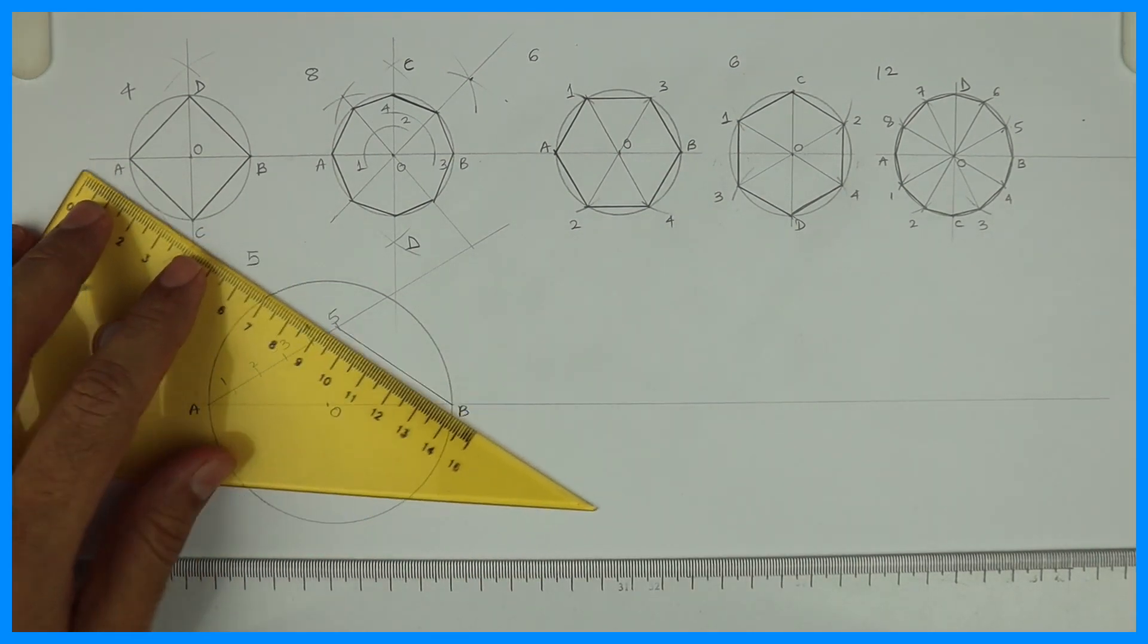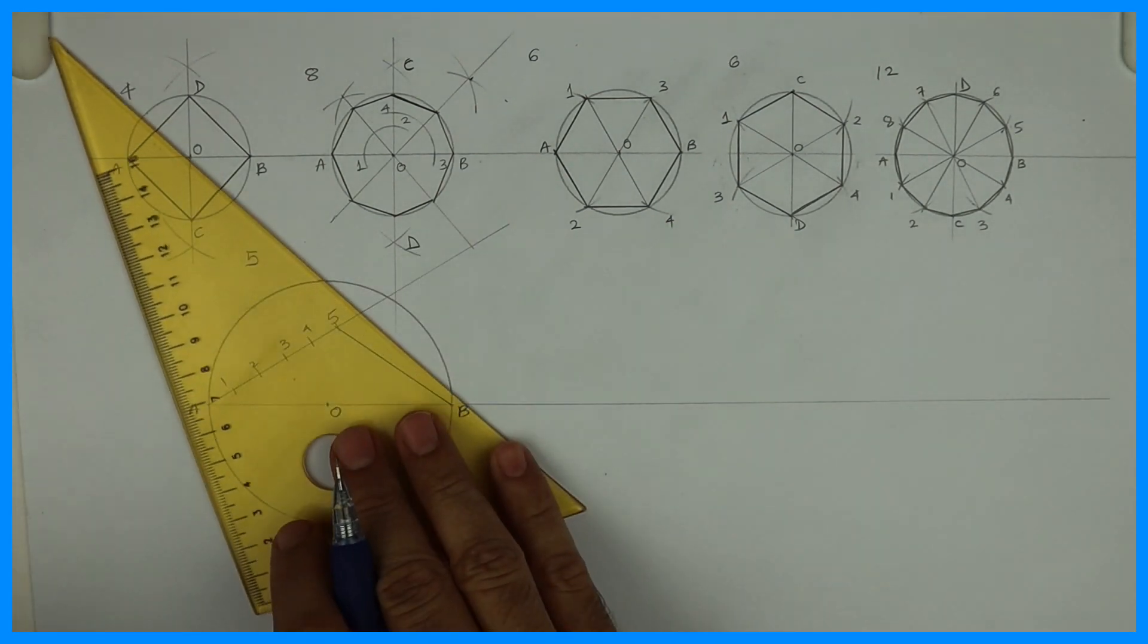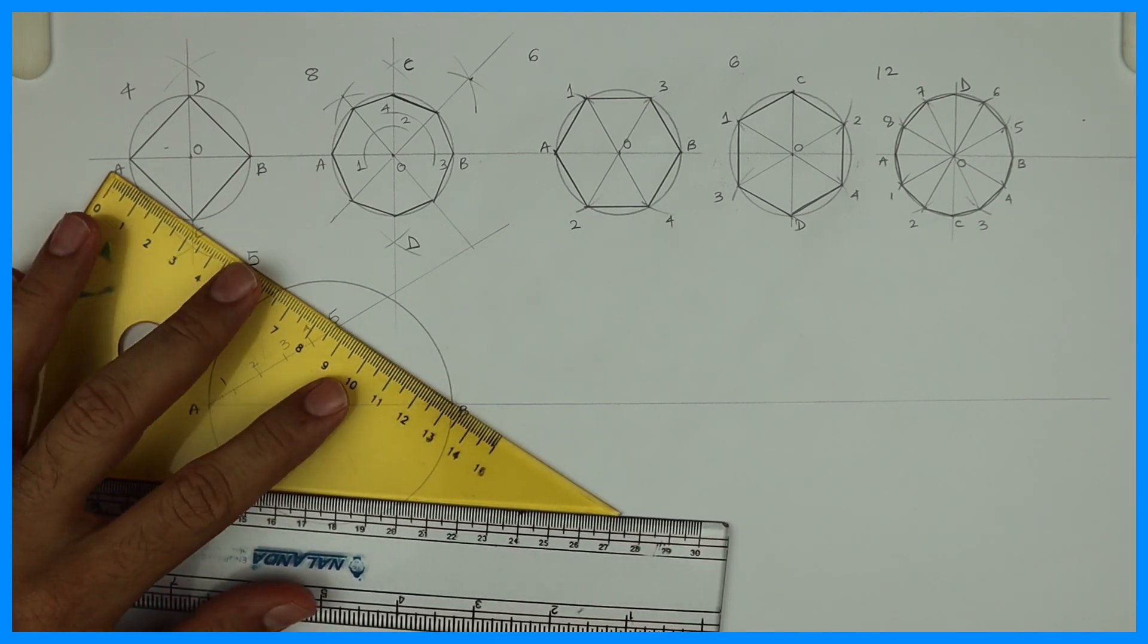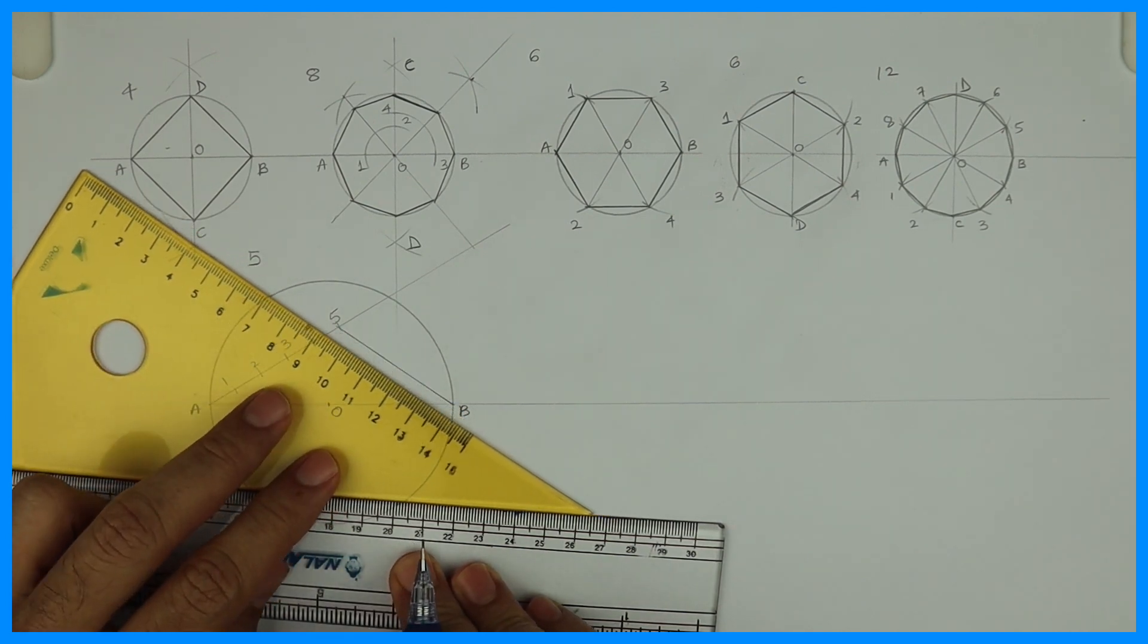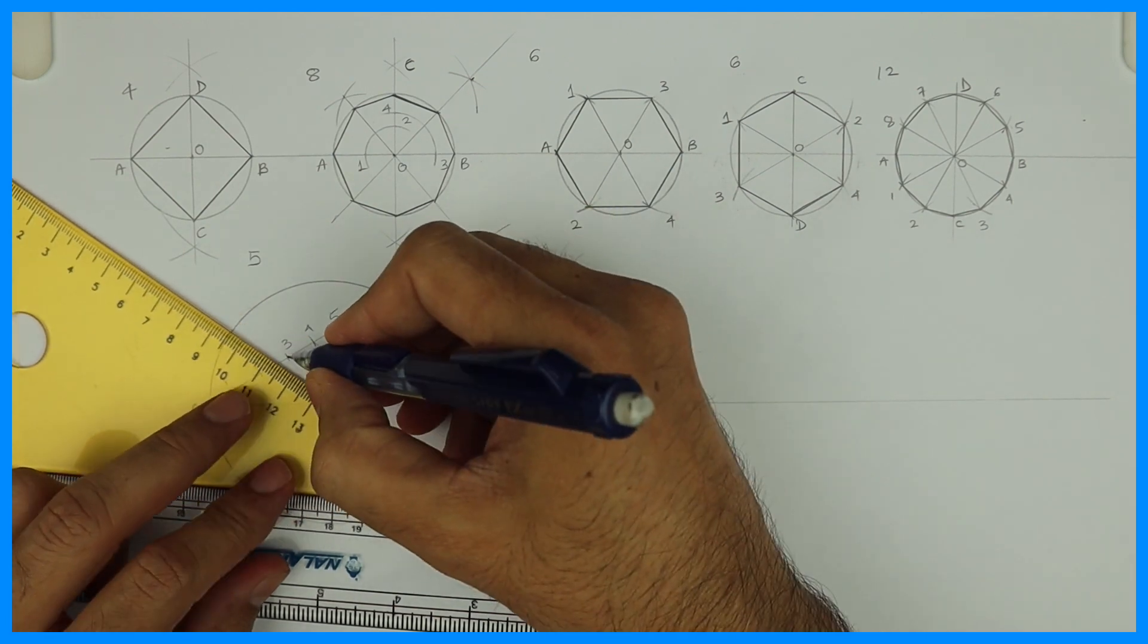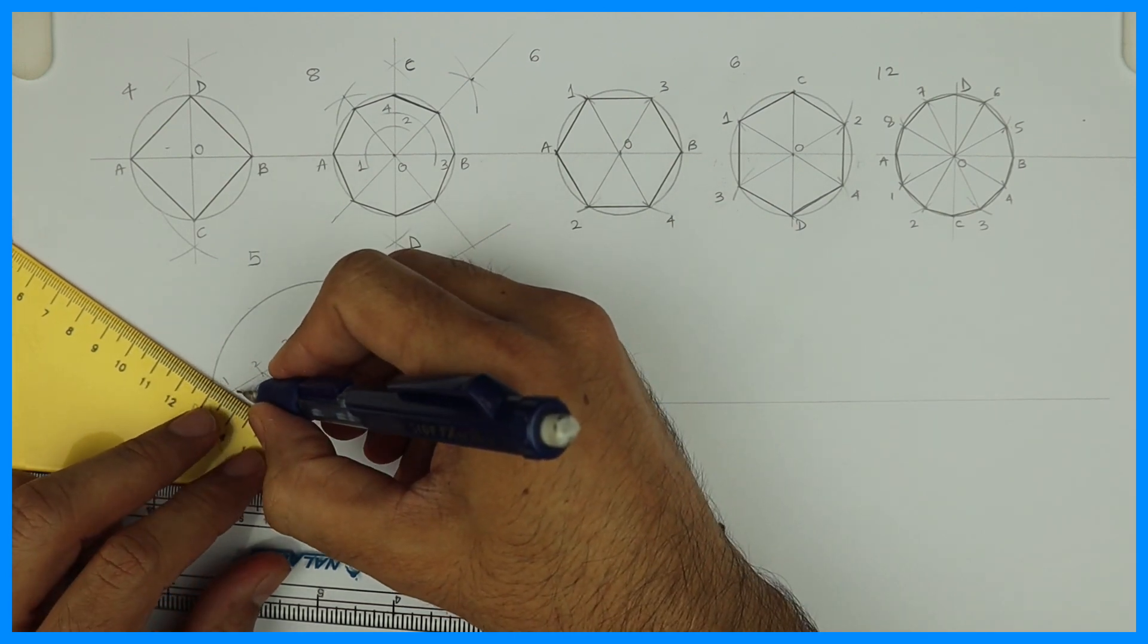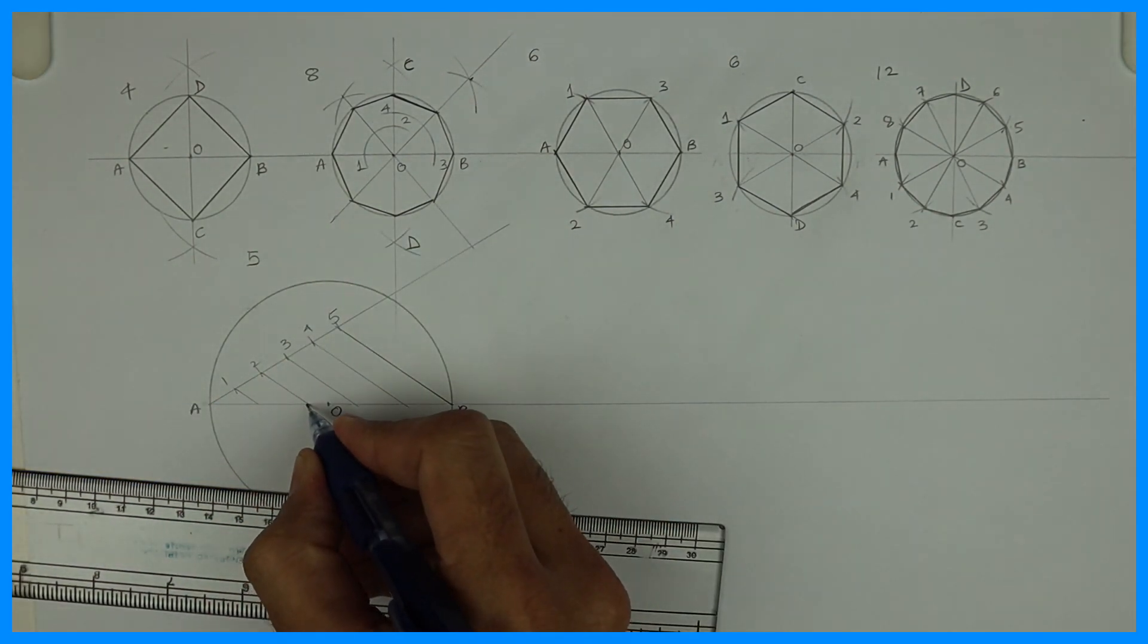Then we'll draw parallel method. If you recollect how to divide line into equal parts, in that we have done this method. It's more like a boat method where we'll keep the set square, we'll give the firm base, and then we will slide. See this. So we got five parts.